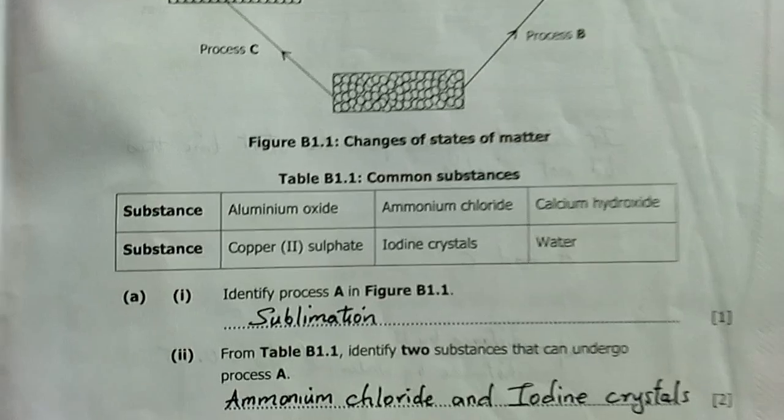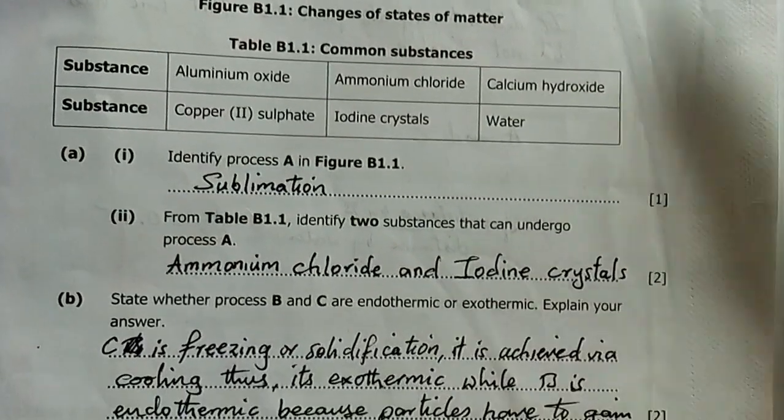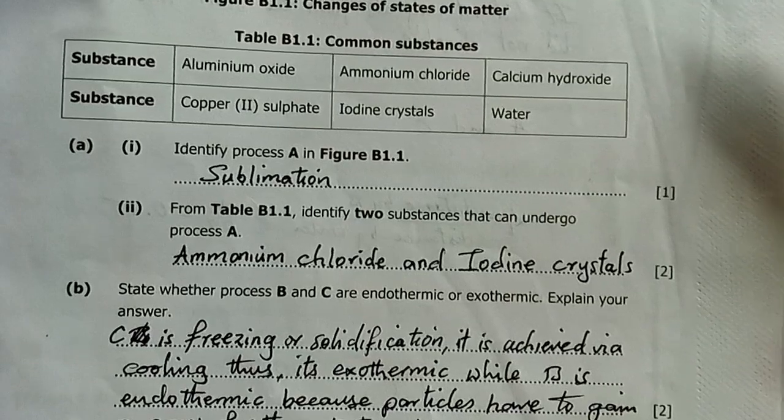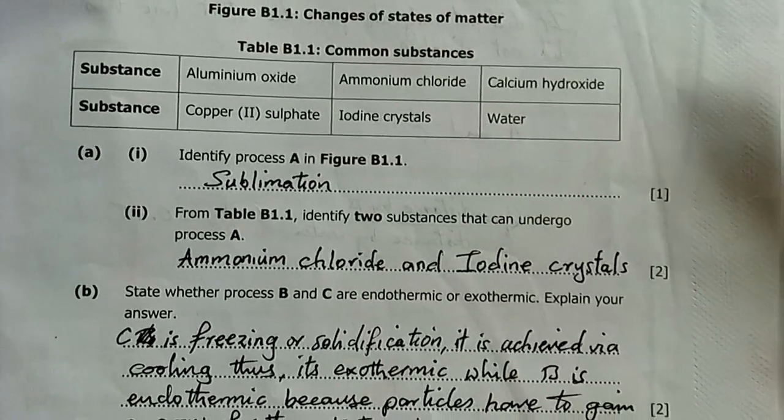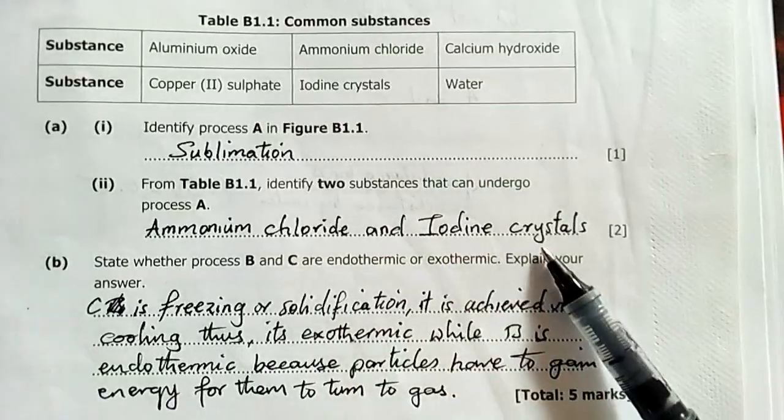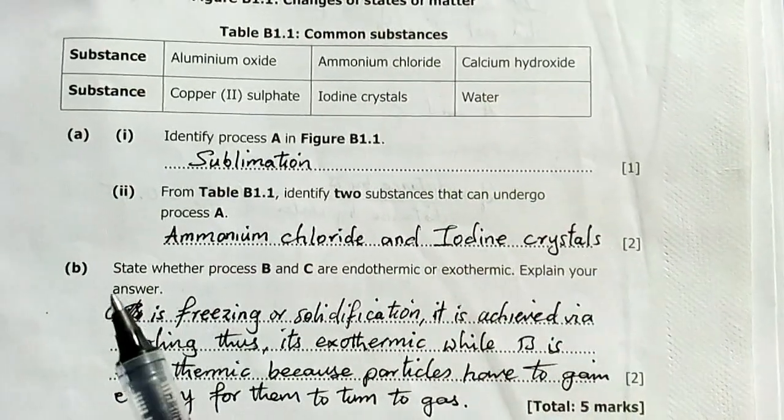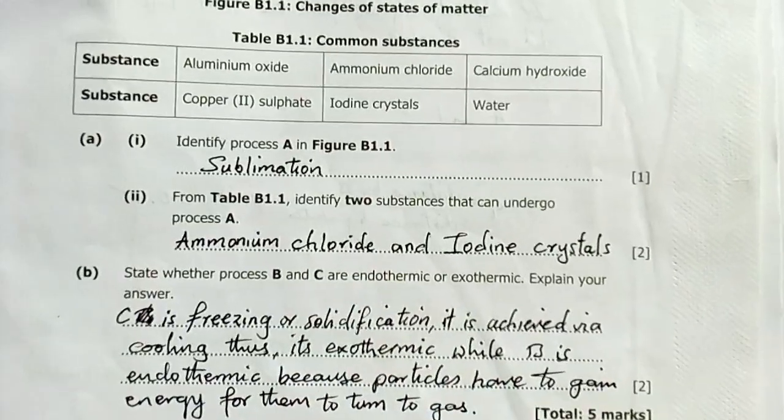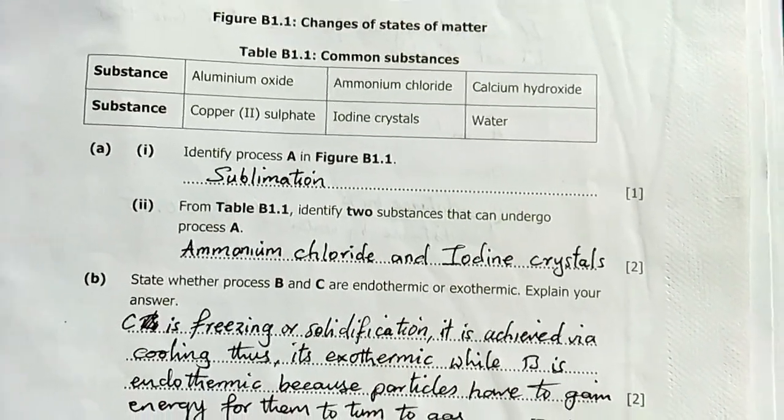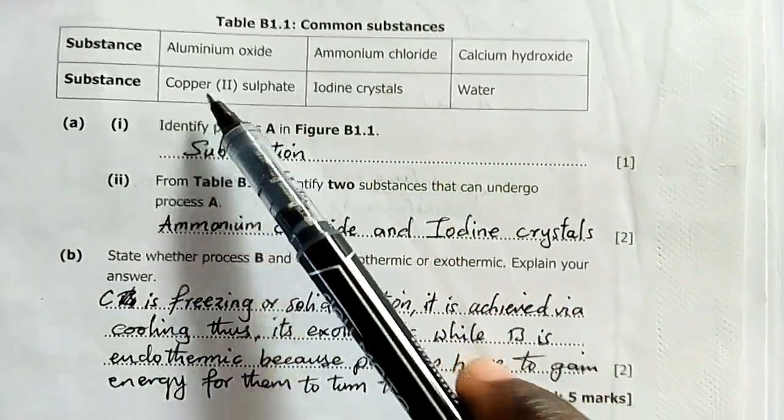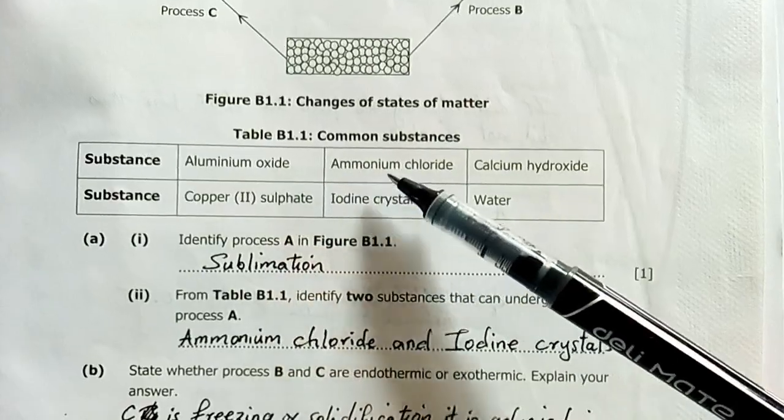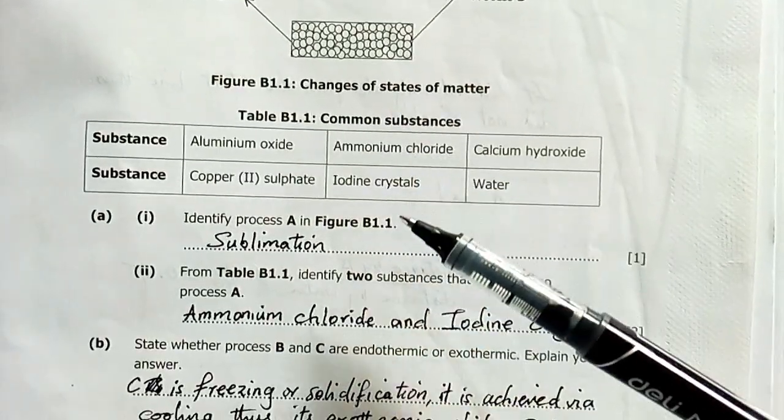Question A2: From table B1.1, identify two substances that can undergo sublimation, which is process A. Iodine crystals sublimate, ammonium chloride sublimate, naphthalene sublimates. Looking at the table: ammonium chloride and iodine crystals sublimate.